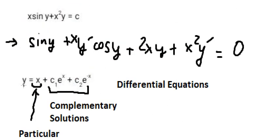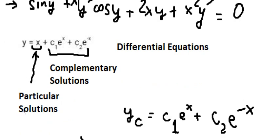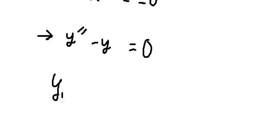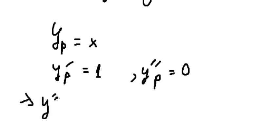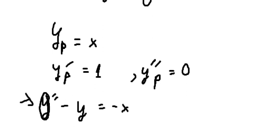For the particular solution, we have y equals x, so y_p equals x. If we take the first derivative we get one, and the second derivative is zero. Because we have the negative in here, on the right we should have negative x. Why? Because if I substitute: the second derivative gives zero, and y gives x, so on the left and right they are the same.